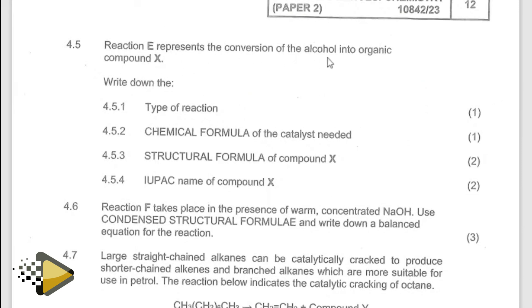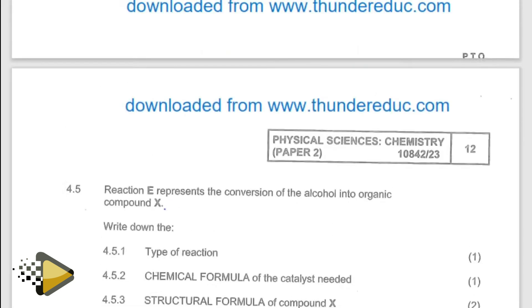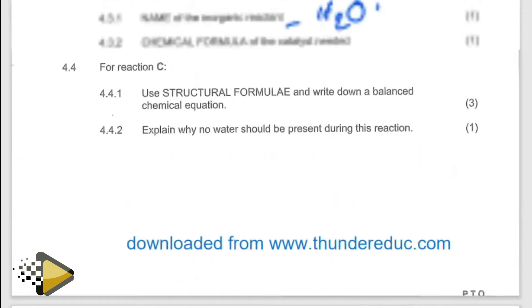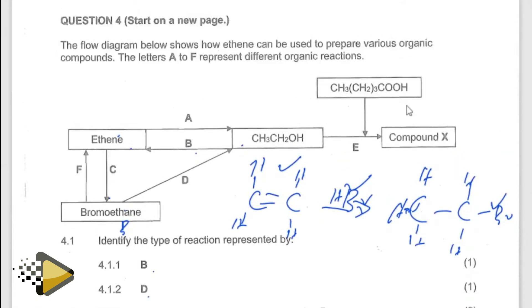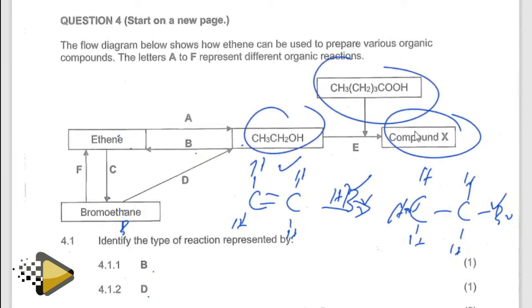Reaction E represents the conversion of alcohol into an inorganic compound X. Formation of alcohol into an inorganic compound X — reaction E. So it means that because you have alcohol and a carboxylic acid, E becomes an ester.